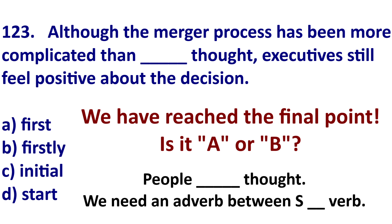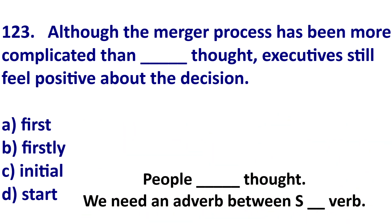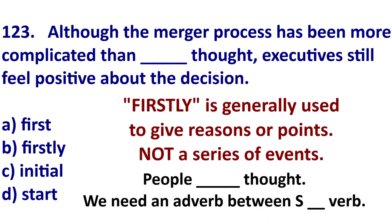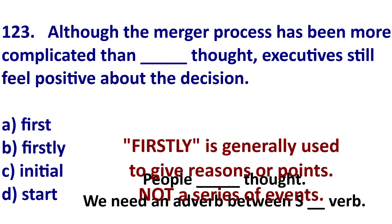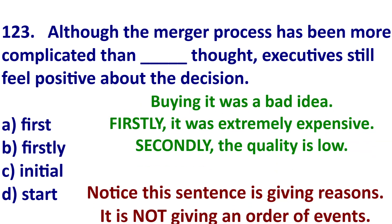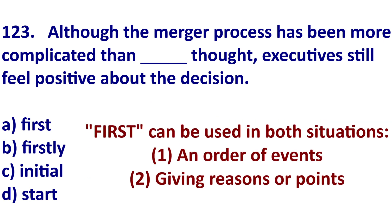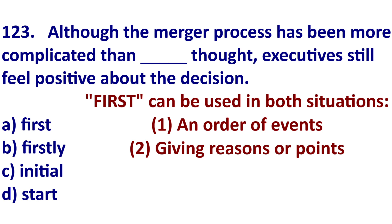So now we have the final two: 'first' and 'firstly.' This is where you're going to hate me. If you chose 'firstly,' this was a smart choice. However, it is not correct. 'Firstly' is used to introduce a first point or reason. It is often at the start of a sentence. For example: it's a bad idea — firstly, it's too expensive; secondly, the quality is poor. So I am giving reasons, making points — I am not talking about an order of events in time. But you can use 'first' in many more situations. 'First' can give reasons, can make points, but also talk about an order of events in time.